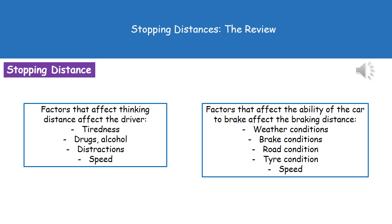Factors affecting thinking distance include tiredness, drugs, alcohol, and distractions such as playing on a mobile phone, having an argument, or singing along to music. Your speed also affects thinking distance. Any of these will affect the distance the car travels in the time it takes you to see a hazard and respond to it.